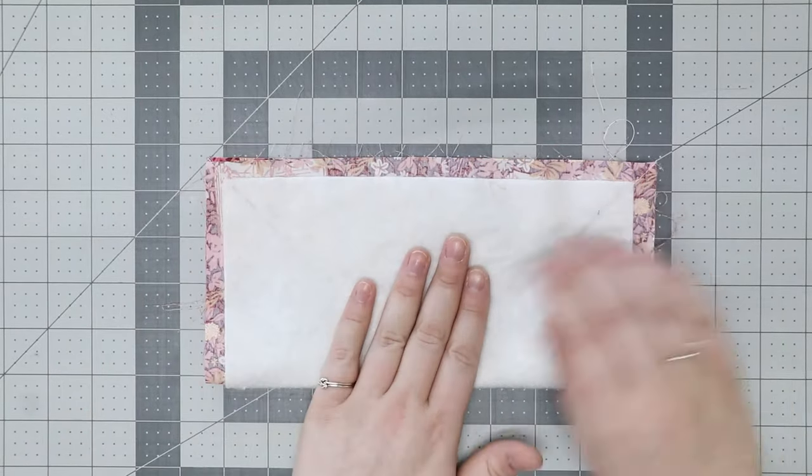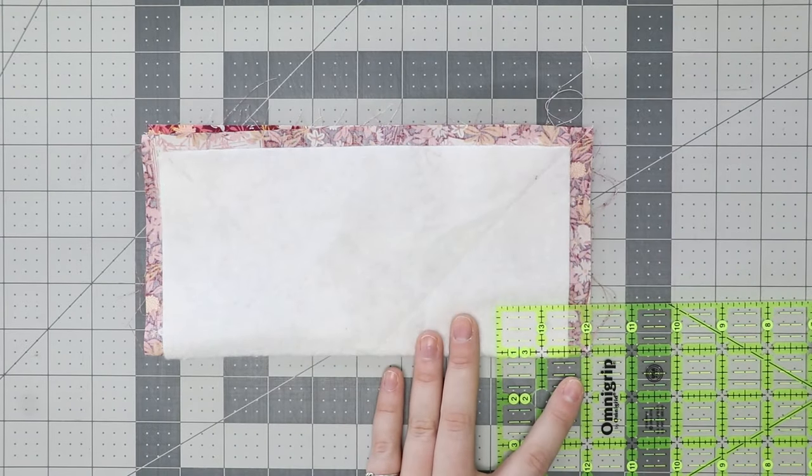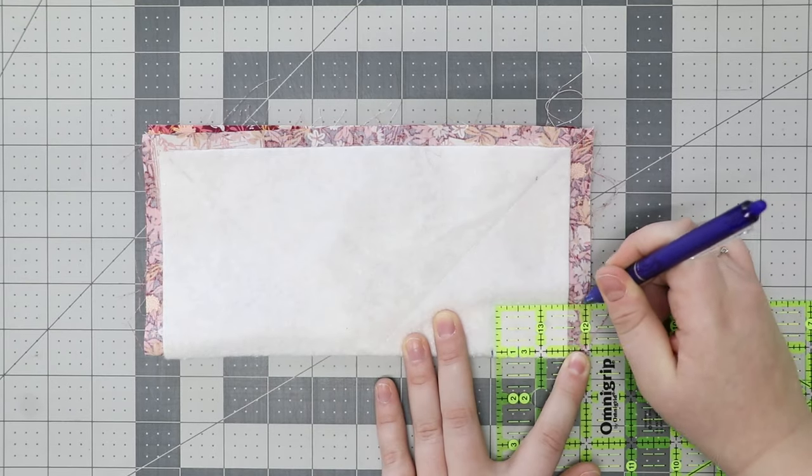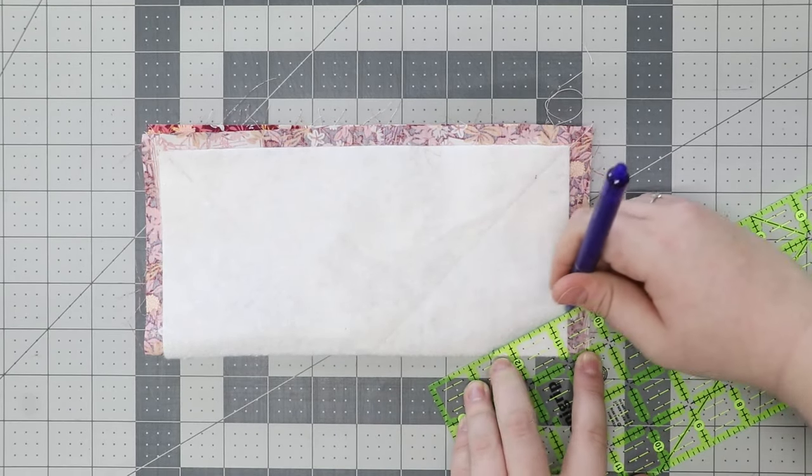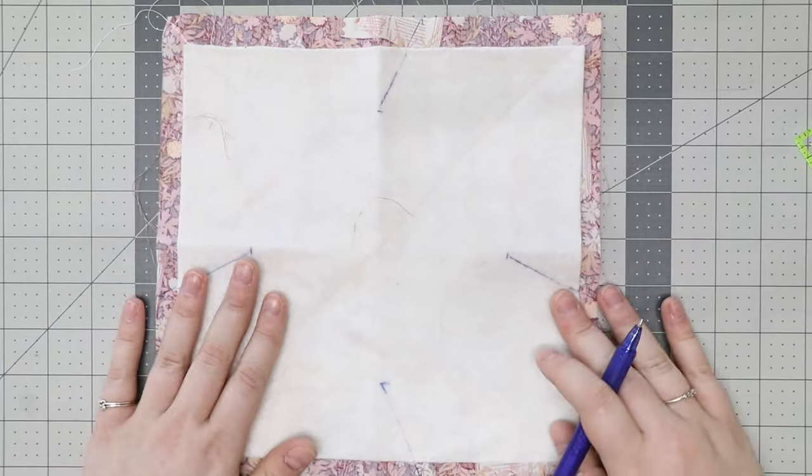Next fold your squares in half right sides together and draw a line in each corner that is one inch up and two inches in. Do that for all four corners on each square and stitch.